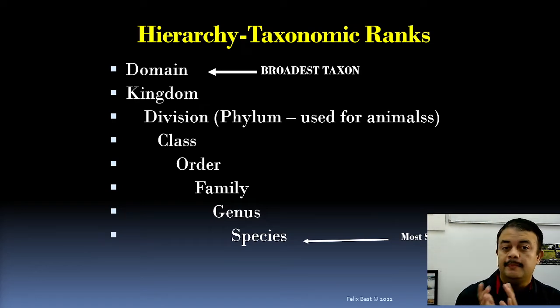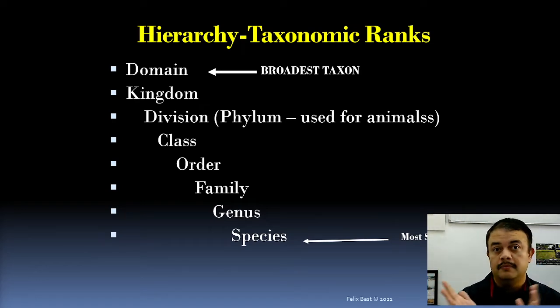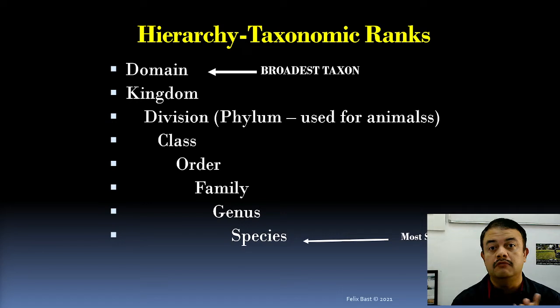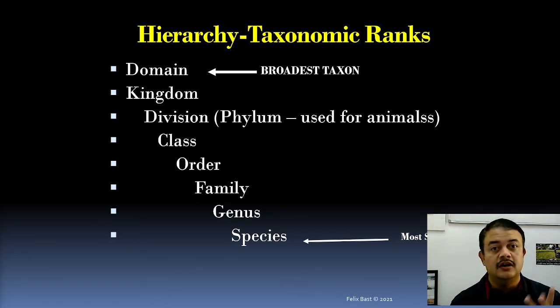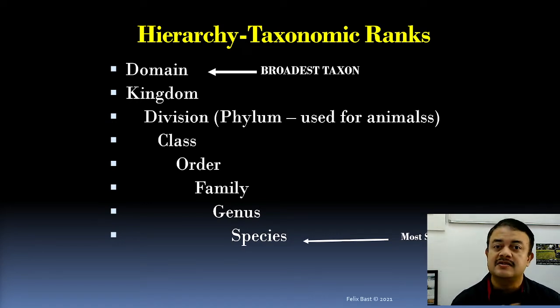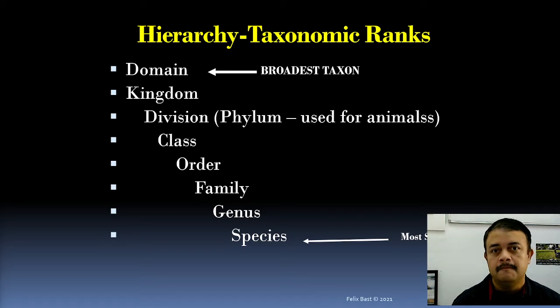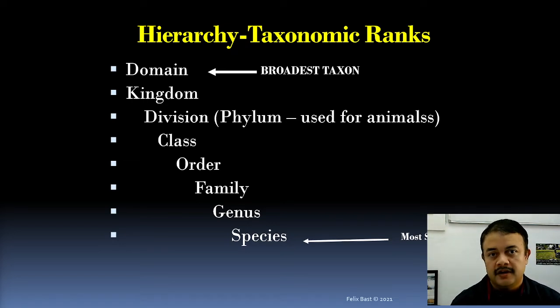The domain is the broadest taxon. In Carl Woese's systematics, there are three domains, which we are still following today: Archaea, Eubacteria, and Eukaryotes.